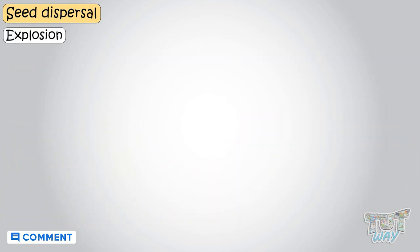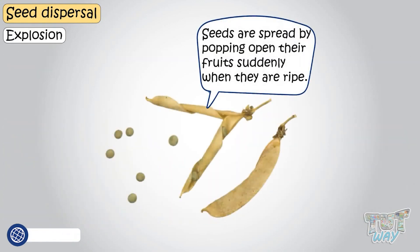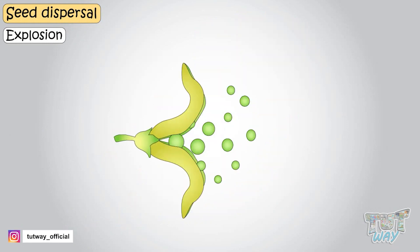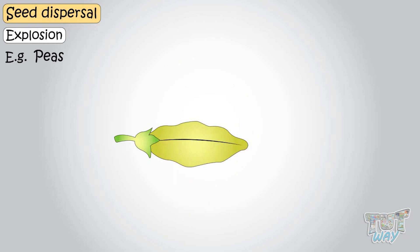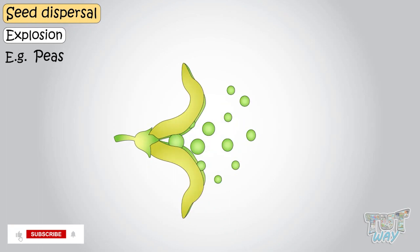In some plants, seeds are spread by the fruits popping open suddenly when they are ripe — that is, fruits explode suddenly when ripe, and this explosion spreads the seeds away from the parent plant to distant locations. An example is peas: the pea pod suddenly splits open violently and makes the seeds fly out in all directions.